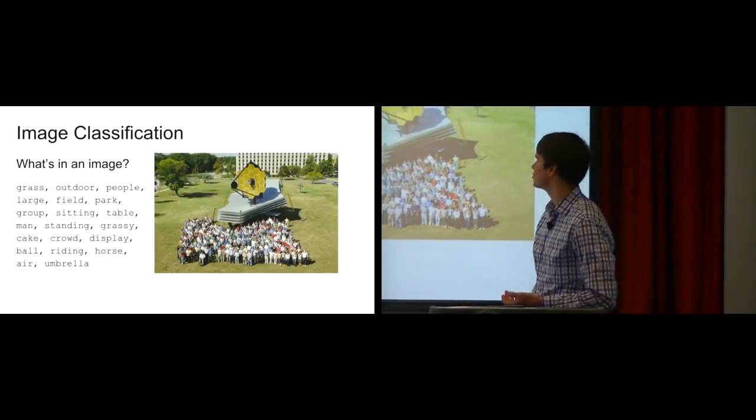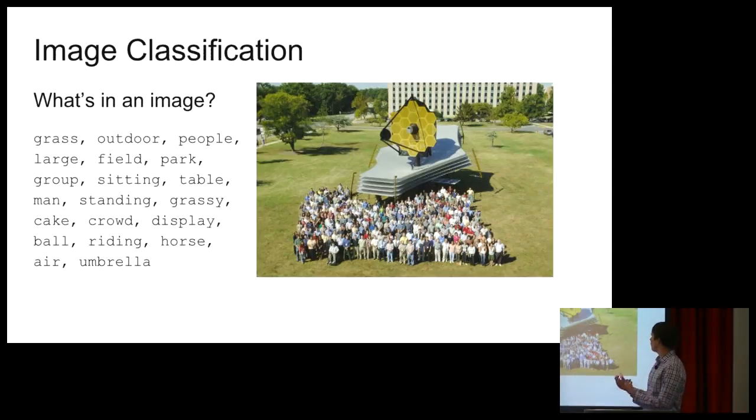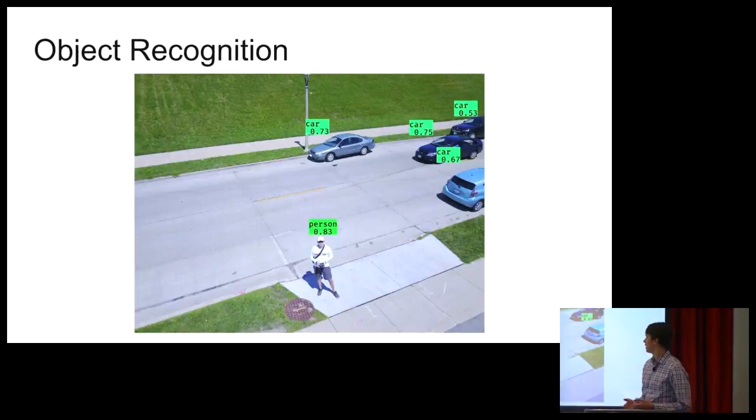So here's an example of image classification. Just give a picture, what is in it? We got a lot of people. There's grass. It's outside. Pretty well. Fits pretty well. Some of the lower probability matches are interesting. And then object recognition localizes objects in an image. You can detect sure it has cars, but where are they? People, multiple classes, that sort of thing.